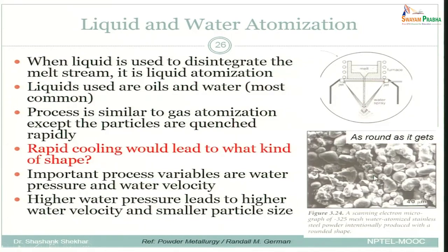This is as round as it gets for liquid atomization. An important process variable is water pressure and water velocity — higher water pressure leads to higher water velocity and smaller particle size. Now let us look at the empirical relation that defines particle diameter with respect to the parameters that affect liquid atomization.